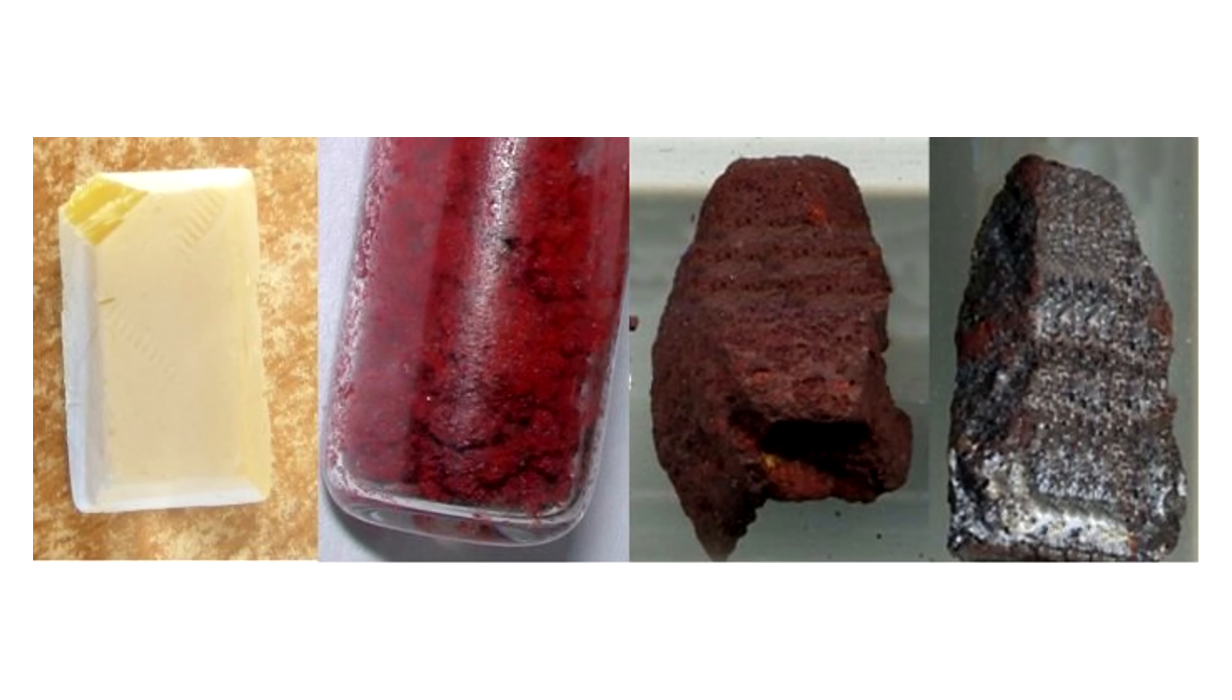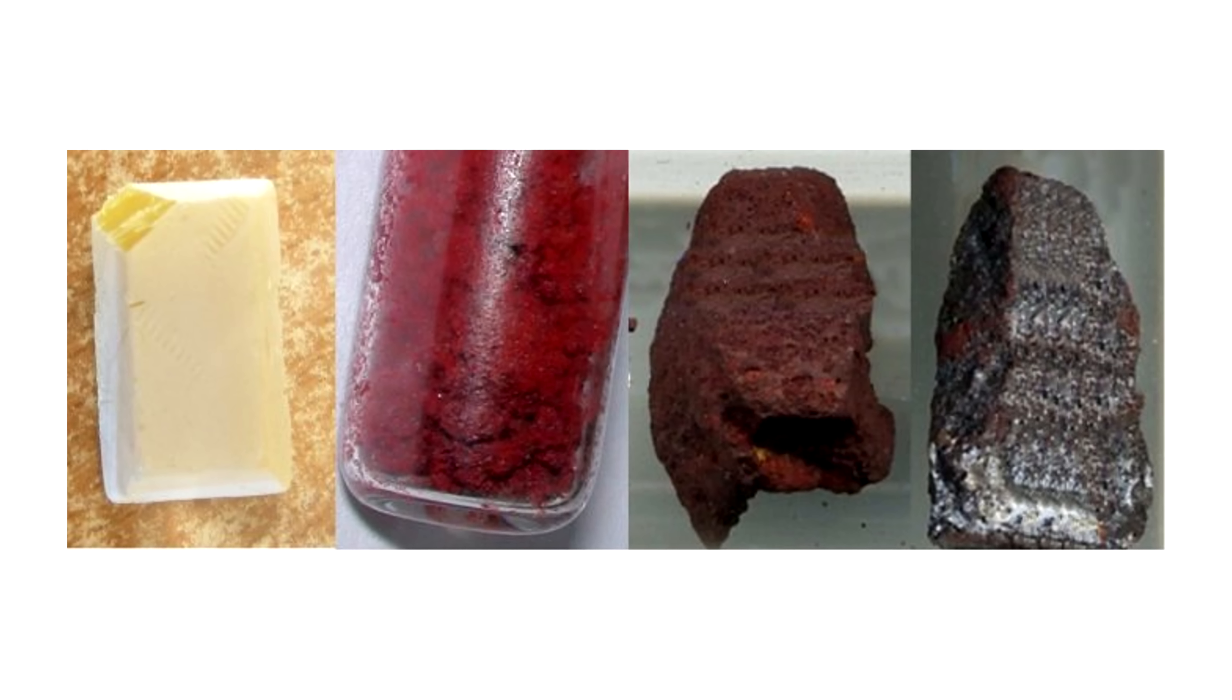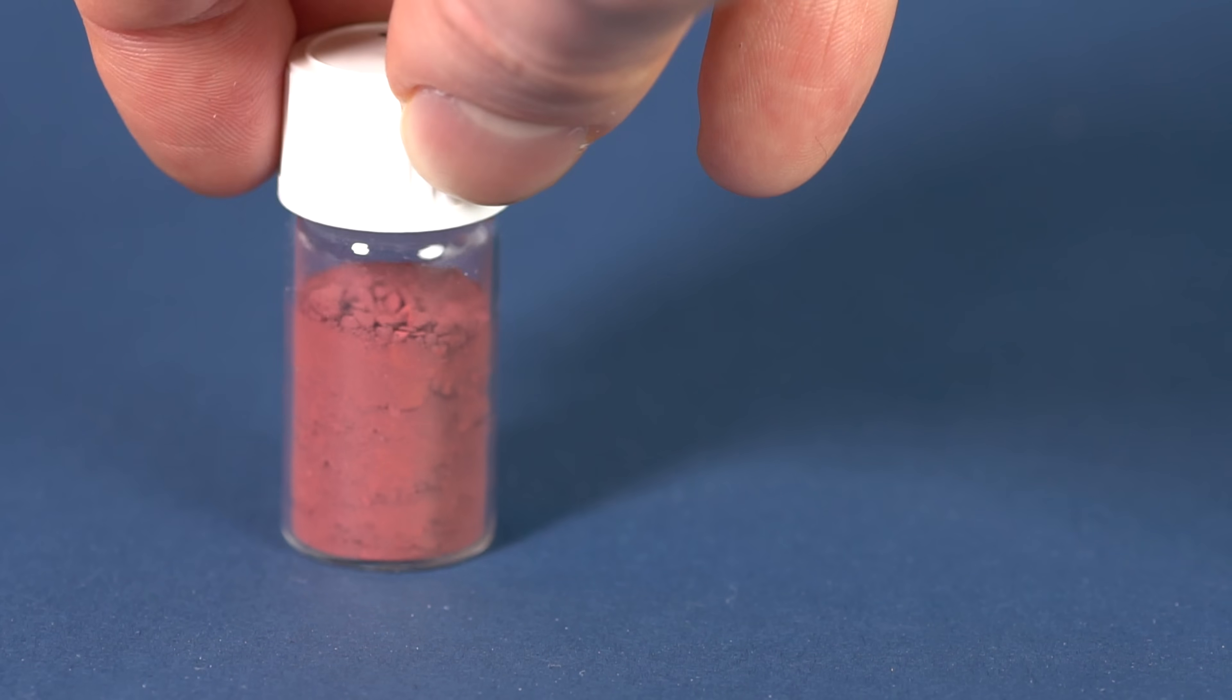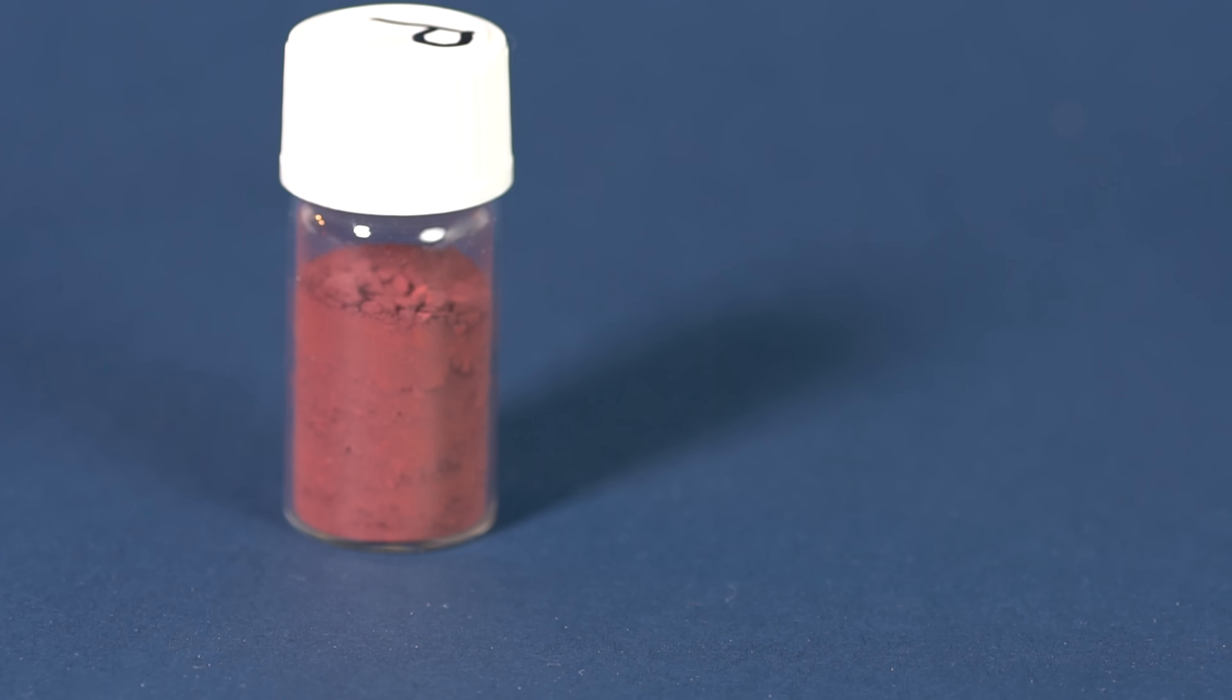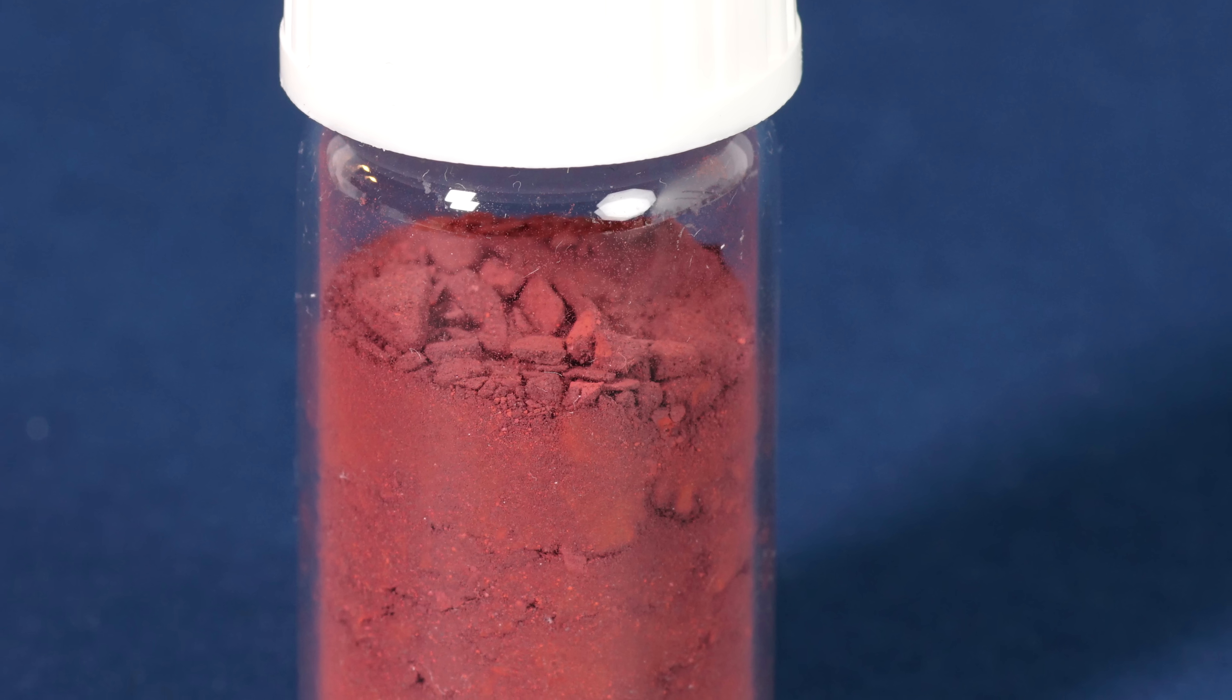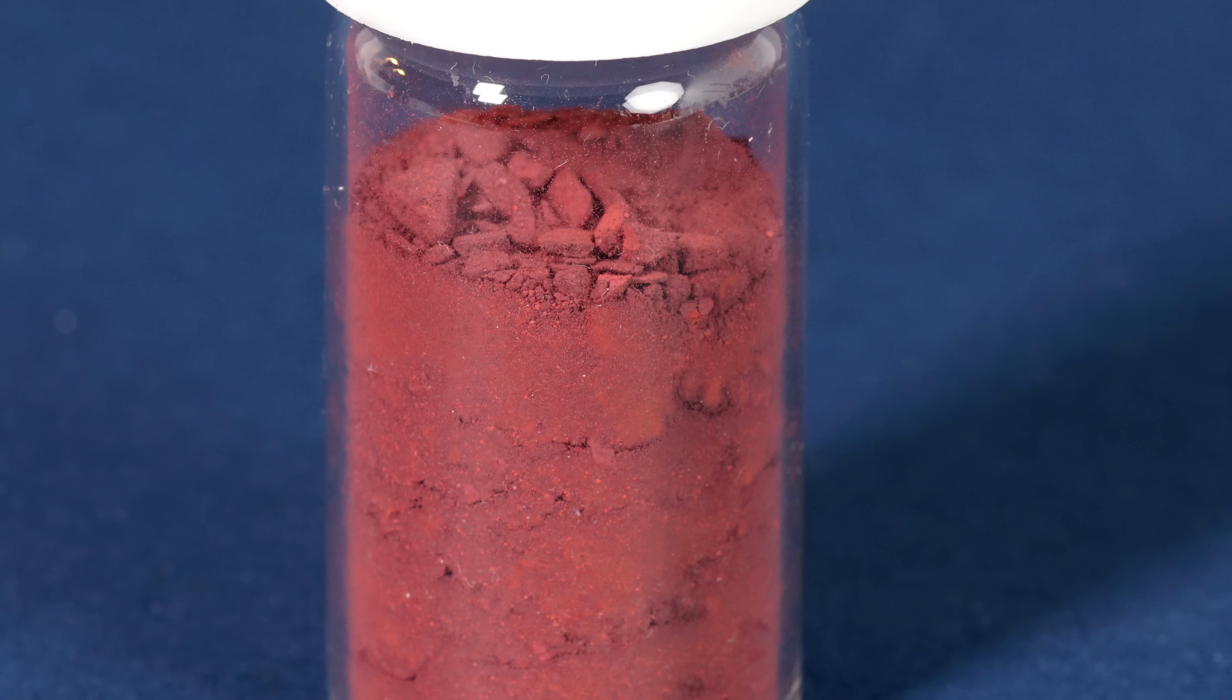Pure phosphorus exists in four allotropic modifications, the most common one of which is the modification of red phosphorus. The red phosphorus looks like a dark red powder which readily absorbs moisture from the air.